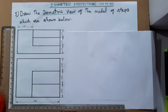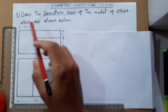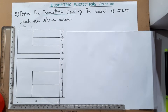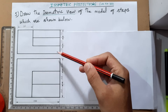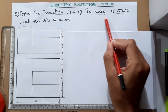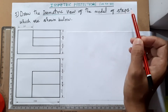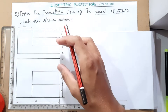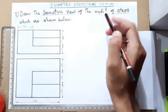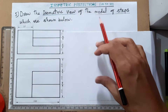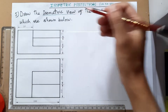Hello friends, I'm Muhammad Rafish, welcome back to my YouTube channel. In this video we will be discussing isometric projections, problem number five. A 2D orthographic view of an object is given — the object is a model of steps. We have to draw the isometric, which means a 3D diagram. In short, it is like converting a 2D orthographic view into a 3D diagram.